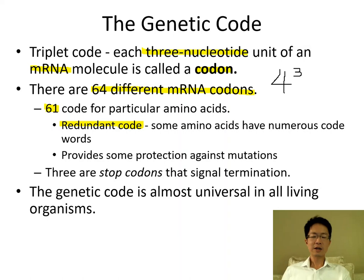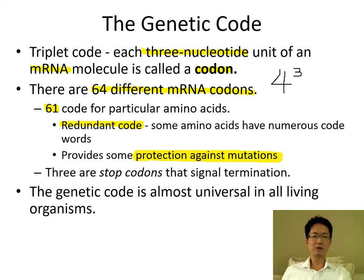Why do we use different codes for the same amino acid? It is mainly to protect against mutation. If a mutation occurs and one of the three nucleotides in a codon changes to a different base, you will still code for the same amino acid. So it helps to minimize the effect — even if there is a mutation, a change in the base sequence, they will still code for the same protein or the same amino acid.